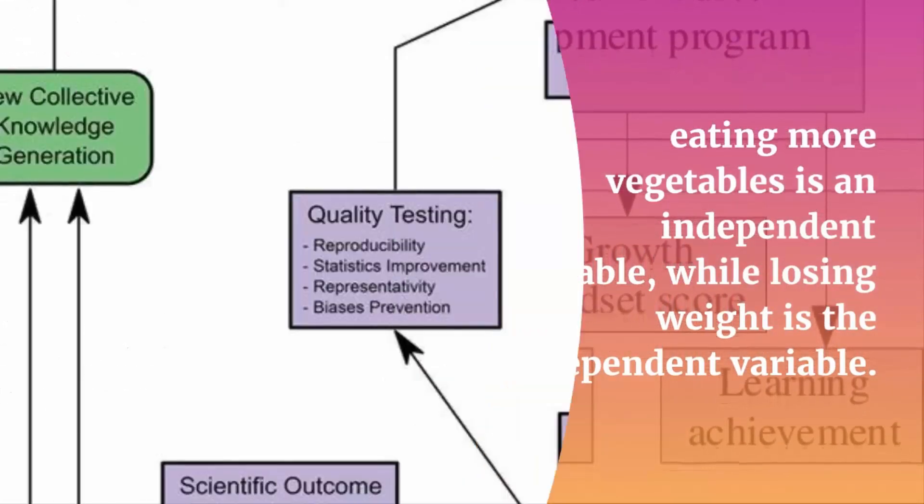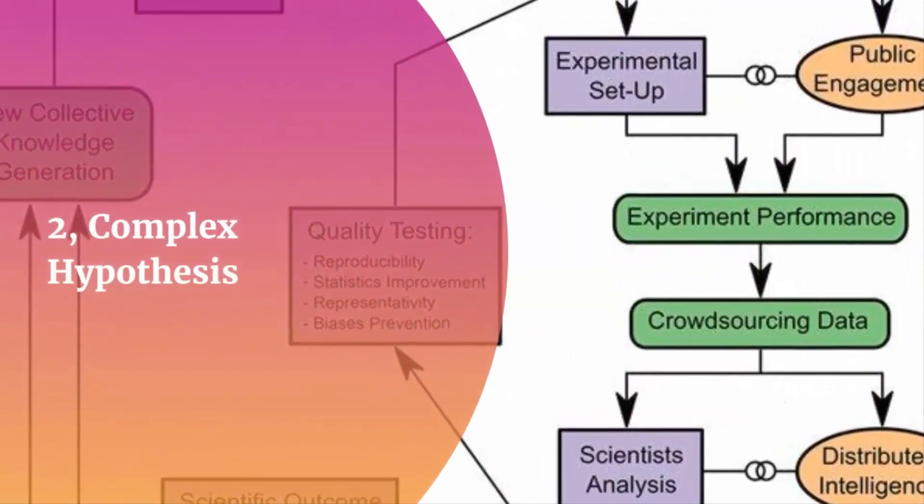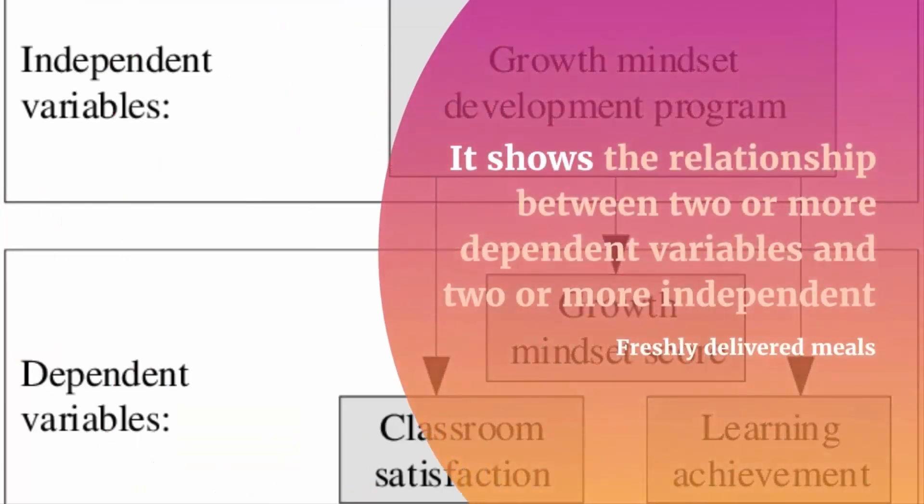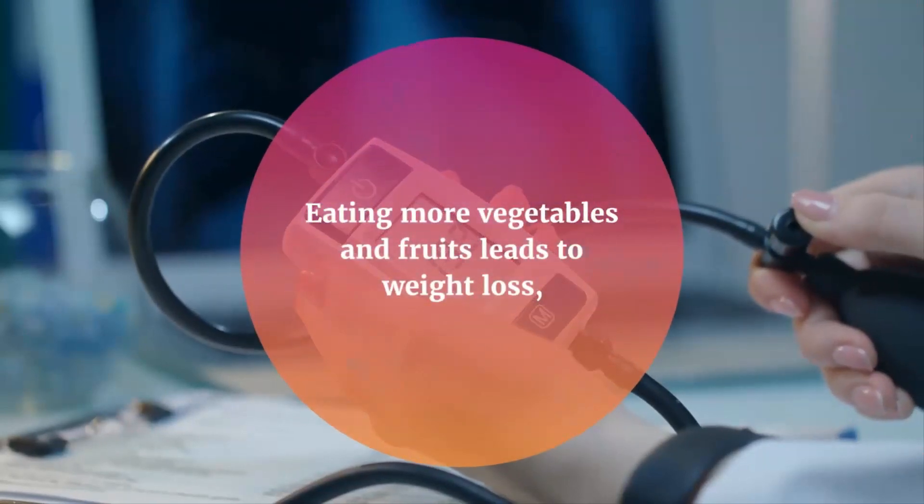2. Complex hypothesis. It shows the relationship between two or more dependent variables and two or more independent variables. Eating more vegetables and fruits leads to weight loss, glowing skin, reduces the risk of many diseases such as heart disease, high blood pressure and some cancers.